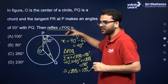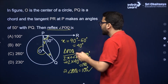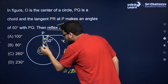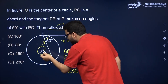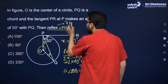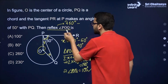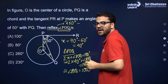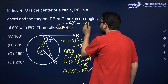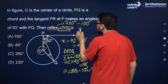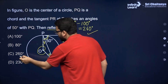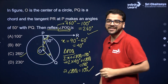Now we have to find the value of reflex angle POQ. The sum of all degrees around a point is 360. Reflex of any angle is 360 degrees minus that angle. Since angle POQ is 100 degrees, the reflex angle POQ is equal to 260 degrees.